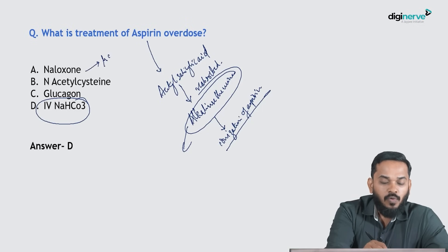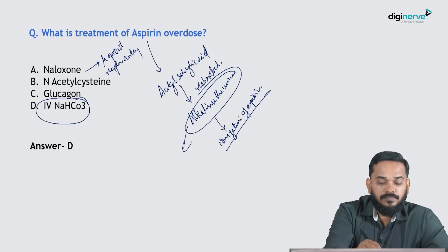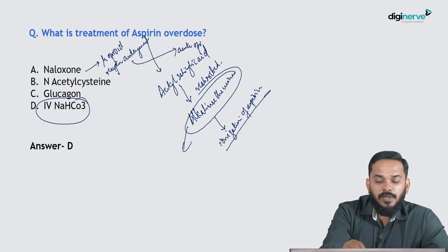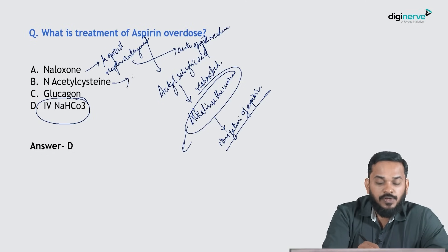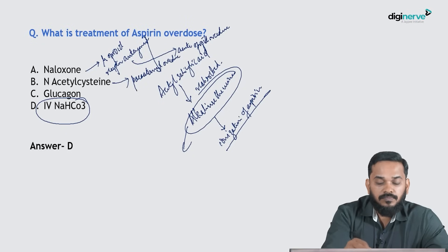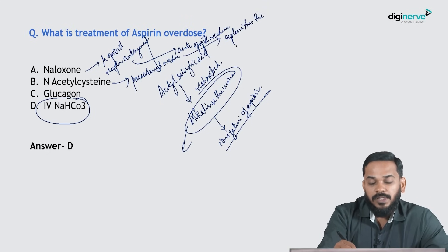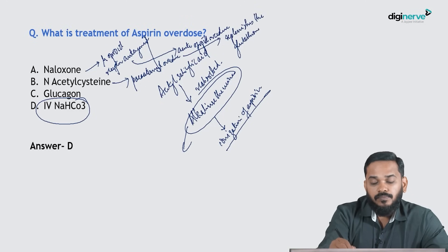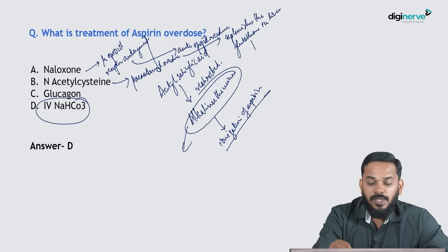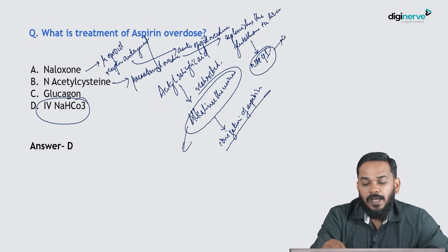Naloxone is a mu opioid receptor antagonist used to counteract acute opioid overdose. N-acetylcysteine is used in paracetamol overdose — it replenishes glutathione in the liver so that N-acetyl-para-benzoquinone imine (NAPQI) can be conjugated and eliminated.